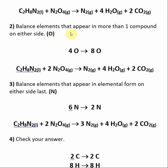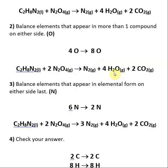Now we balance elements that appear in more than one compound on either side of the reaction. The only element that fits this requirement is oxygen. Oxygen is in two molecules on the right-hand side of the equation, so we need to take extra care when counting. We have four oxygens on the left. On the right, we have four oxygens from water and four oxygens from CO2, giving us eight oxygens on the right. To balance, we put a stoichiometric 2 in front of N2O4, giving us eight oxygens on both sides.